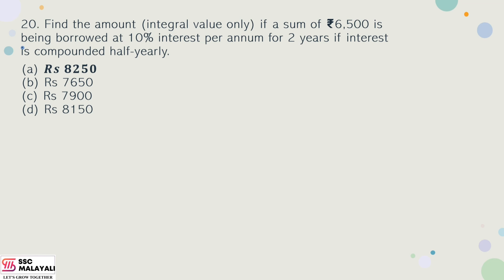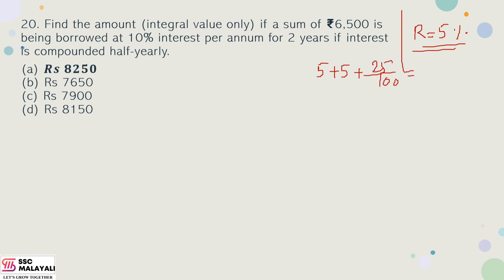20th question: Find the amount if a sum of Rs. 6,500 is put out at 10% interest per annum for 2 years, if interest is compounded half-yearly. Since it is half-yearly, there are 4 half-year periods. The half-yearly rate is 5%, so effective rate for two periods is 5 + 5 + 25/100 = 10.25%.